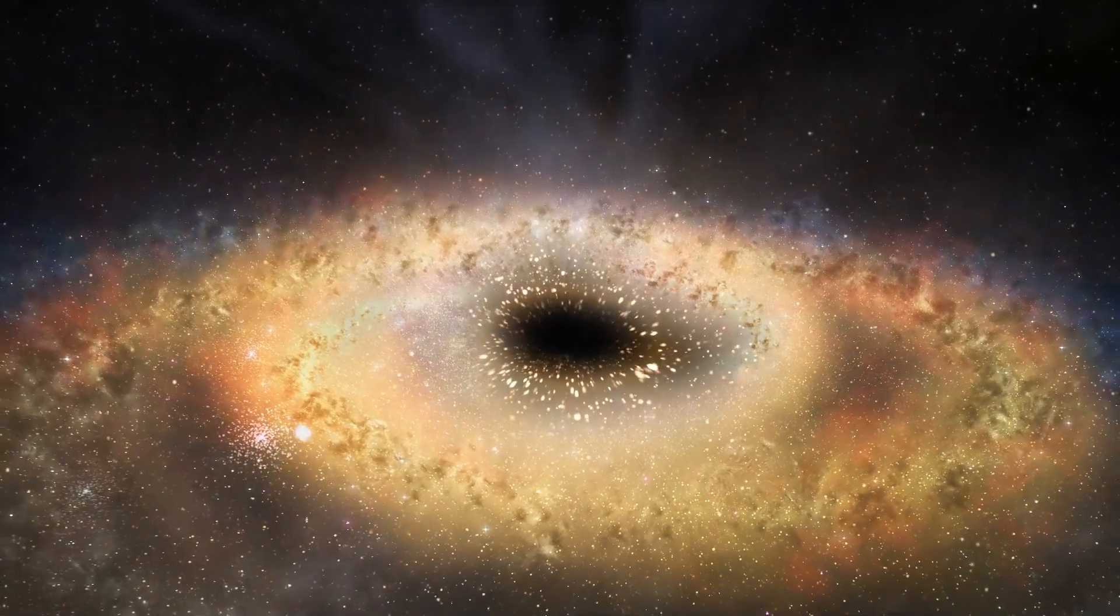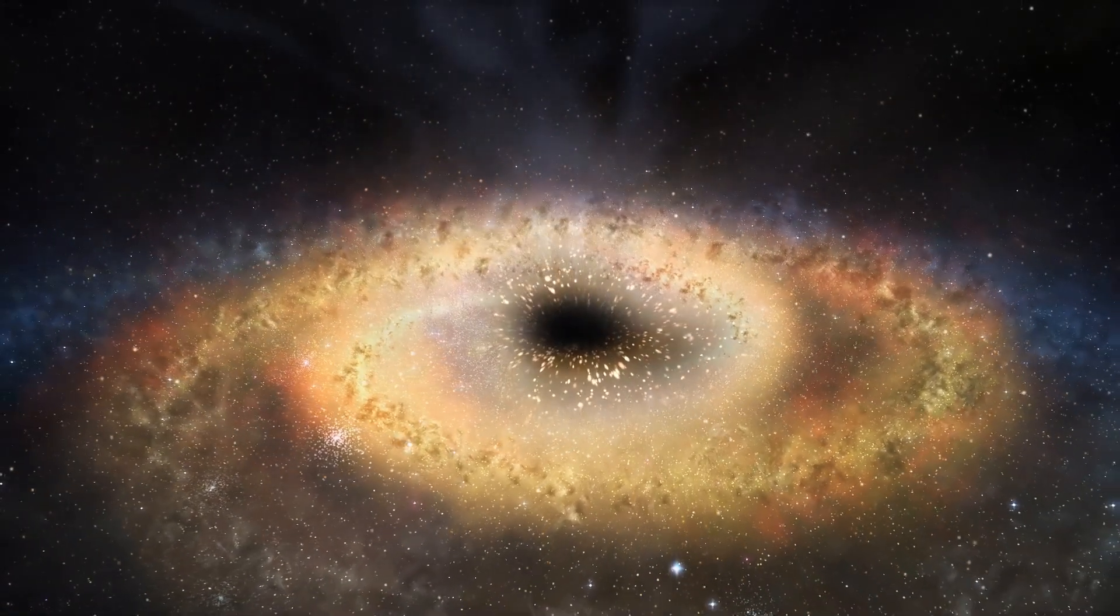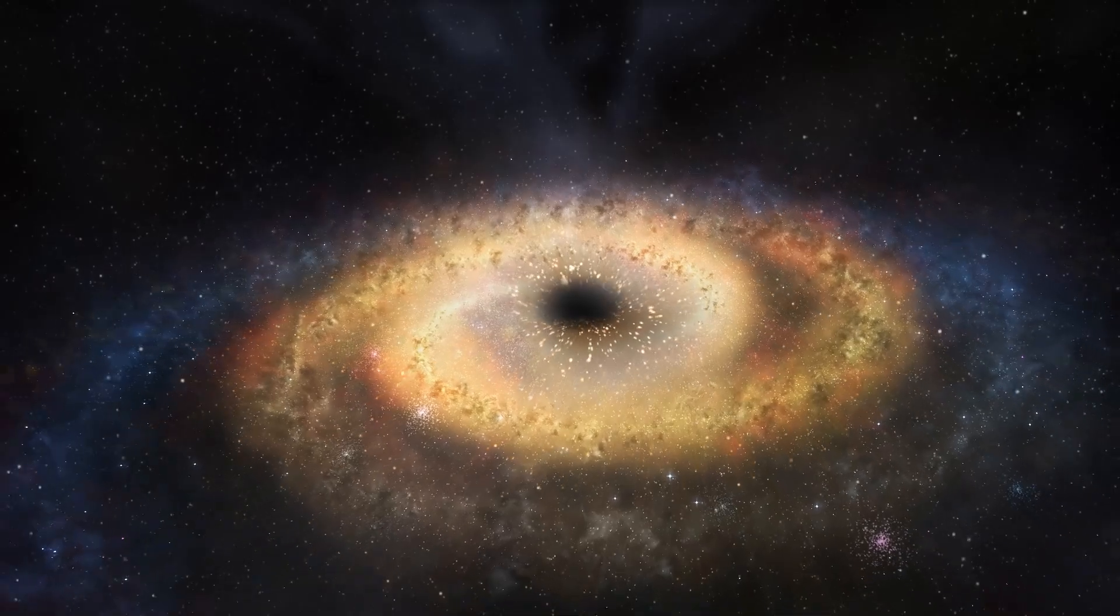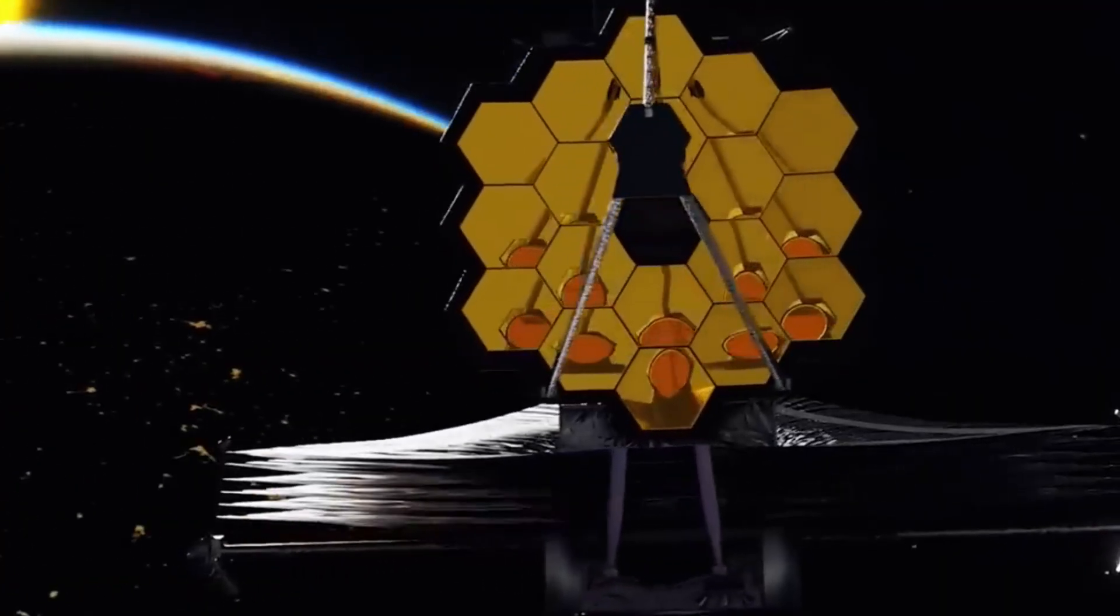Researchers have long believed that smaller black holes would have existed in the early universe, but solid evidence was not available until the Webb telescope began its observations.